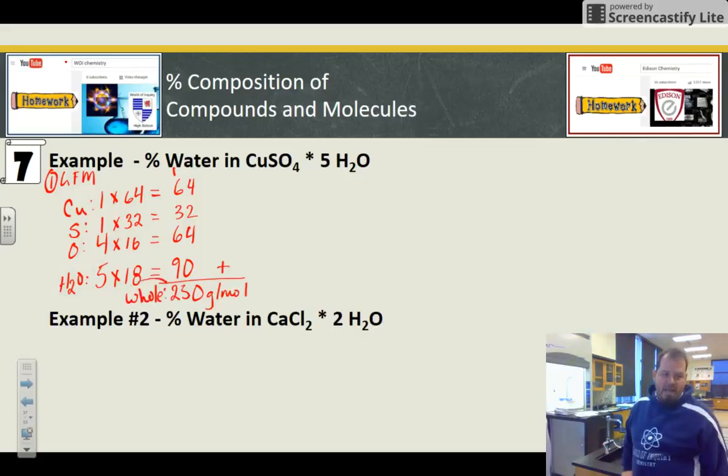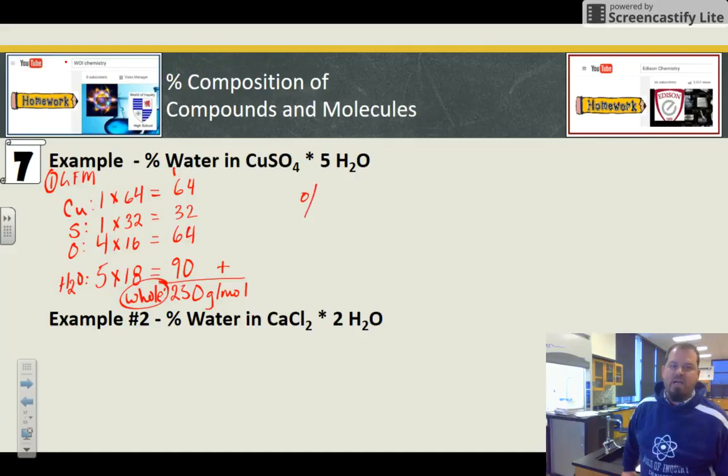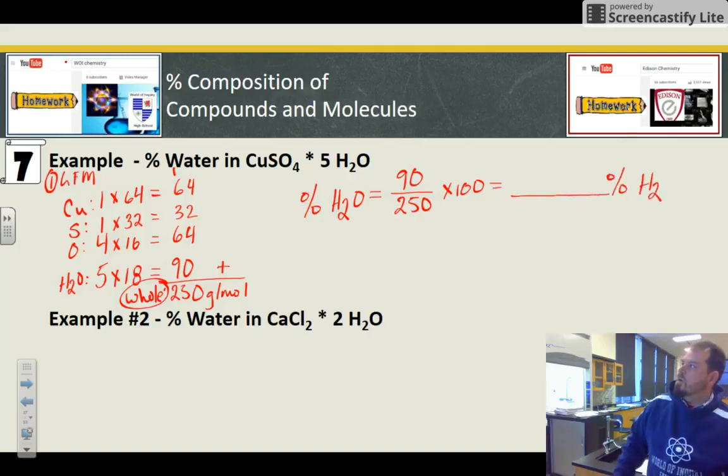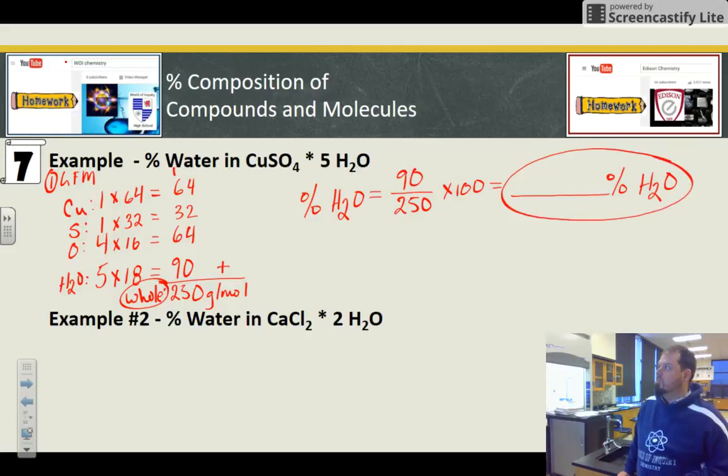So that's the gram formula mass of this hydrate. So we want to do percent water. So now what we're going to do is take the part that is water. In this case, it's 90 because five waters weighs 90. And then times 100. And I, boom. That is the percent water.